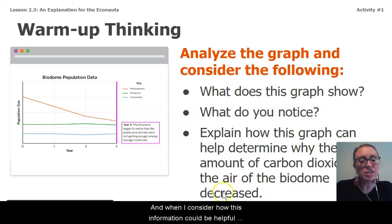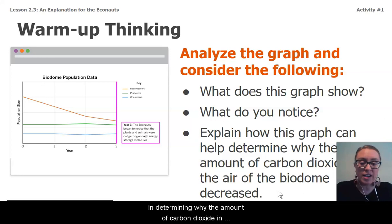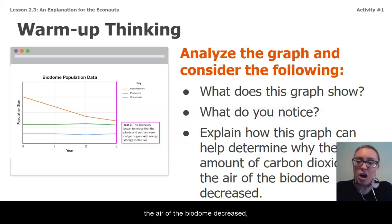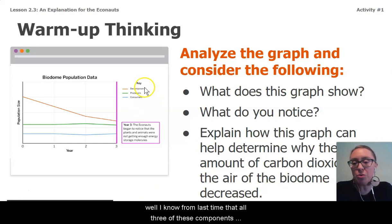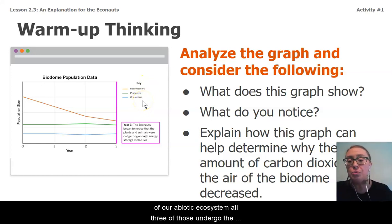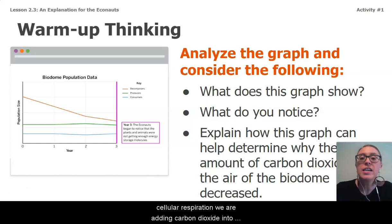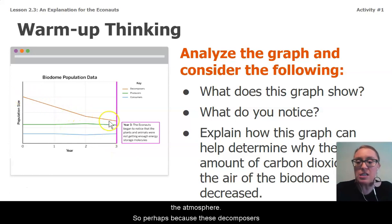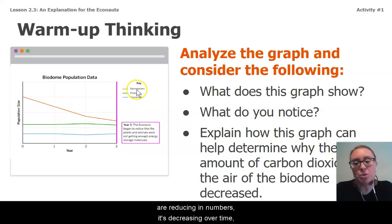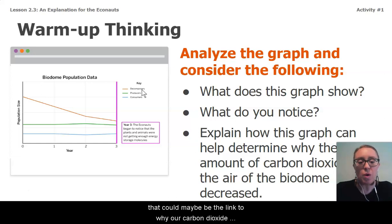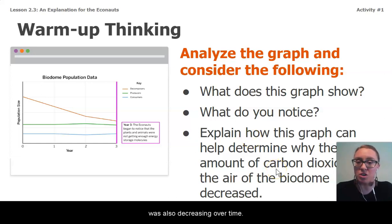And when I consider how this information could be helpful in determining why the amount of carbon dioxide in the air of the biodome decreased — well, I know from last time that all three of these components of our abiotic ecosystem undergo the process of cellular respiration, and through that process of cellular respiration we are adding carbon dioxide into the atmosphere. So perhaps because these decomposers are reducing in numbers and decreasing over time, that could maybe be the link to why our carbon dioxide was also decreasing over time.